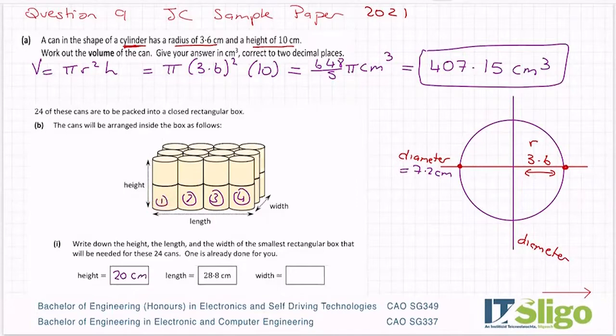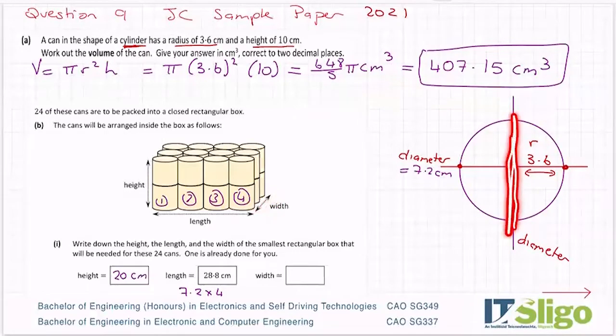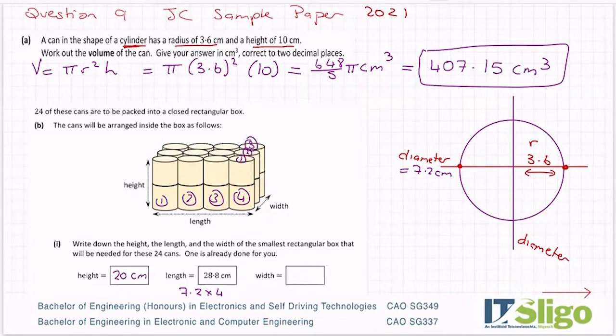So one of these cans is 7.2 across. Now, if I multiply that by 4 on my calculator, 7.2 by 4, that's how they got the 28.8. So this was 7.2 by 4. So in the same way, when I'm getting the width, I'm just looking at the diameter of the other direction of the circle. And I have one, two, three cans back. So to get the width, it would be 7.2 by 3, which is 21.6 centimeters.